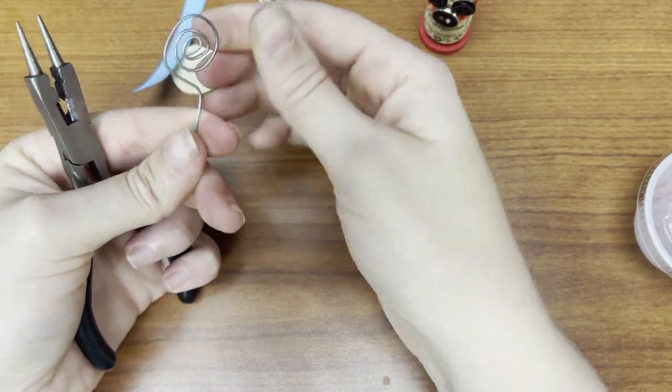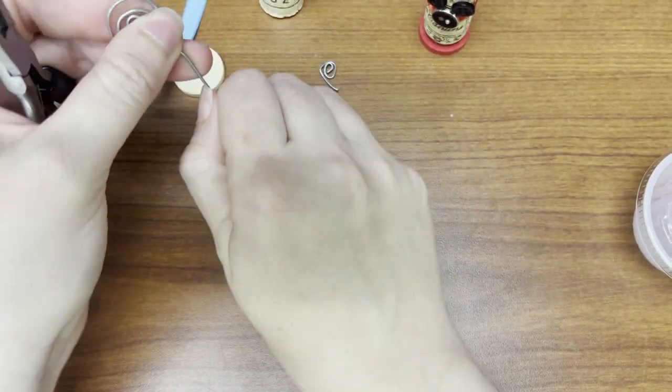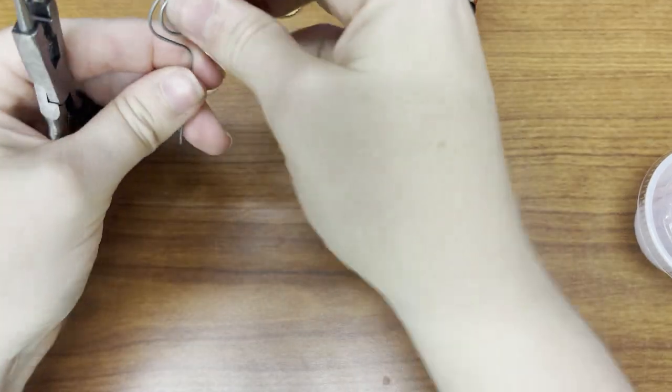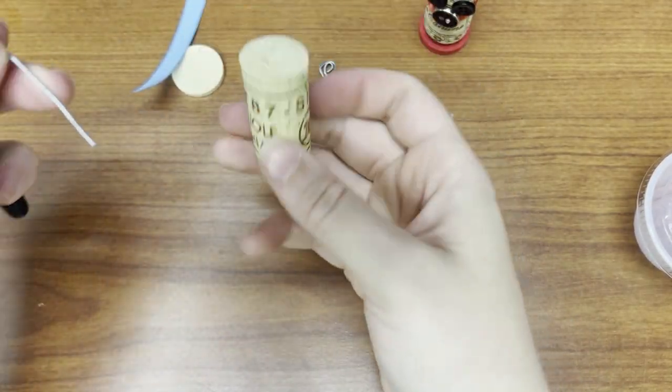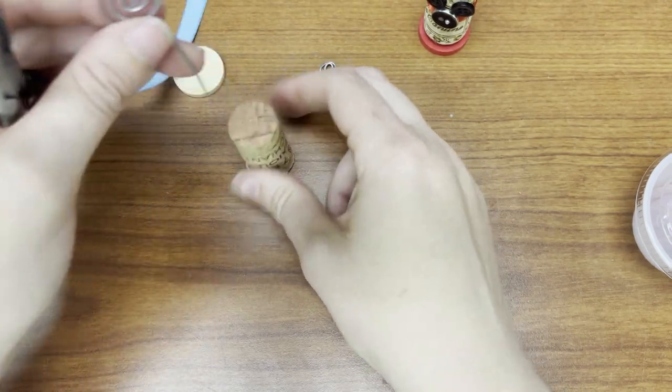You'll curl it back, kind of like the end of a backwards question mark. That way it stands up straight, and then you can put it into whichever side of the cork you want.